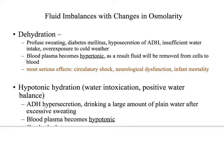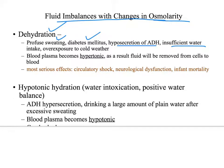If we're changing osmolarity — losing water or gaining solutes without them changing together — that's a different type of imbalance. An example is dehydration. With profuse sweating, you lose water but not all the salts. Diabetes mellitus causes excessive urination without losing the solutes. Hypersecretion of antidiuretic hormone, not drinking enough, or overexposure to cold can all cause dehydration. The blood becomes hypertonic and fluid moves from the cells to the blood.